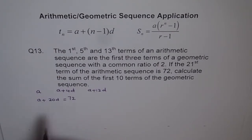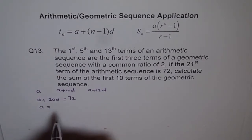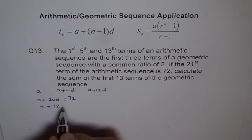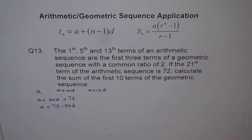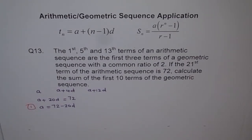From that, we can find a relation between A and D. We can write A equals 72 minus 20D. Let us call this Equation 1.